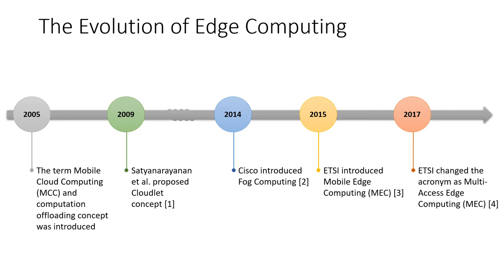Before going further, I want to highlight the evolution of edge computing. Actually, edge computing philosophy is not new — it was used before 2000 as well. The mobile edge computing term was first used in 2005, and we also used this term in our previous publications. Then Satya introduced the cloudlet concept in 2009, and after this proposal, mobile cloud computing became popular. Then Cisco introduced the fog computing concept, which is similar to mobile cloud computing. In 2015, ETSI introduced mobile edge computing and we started using this term. In 2017, ETSI changed the MEC acronym to multi-access edge computing, and we started using this term since it was more popular. As a result, there are many similar approaches proposed in this domain, so we prefer to use edge computing as an umbrella term.